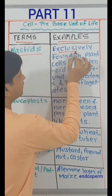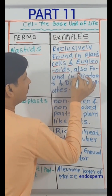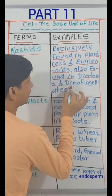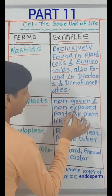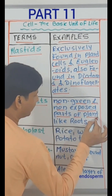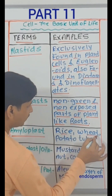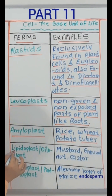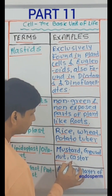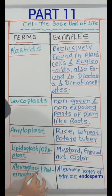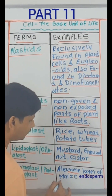Plastids — exclusively found in plant cells and euglenoids; also found in diatoms and dinoflagellates. Leucoplast — non-green and non-exposed parts of plant like roots. Amyloplast — rice, wheat, potato tuber. Lipidoplast, that is oiloplast — mustard, groundnut, castor. Aleuroplast, that is proteinoplast — aleurone layer of maize.